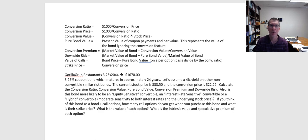If the stock goes up, you can convert that bond into shares of the underlying stock at a fixed conversion ratio. For example, a bond might be convertible into 10 shares of common stock or maybe 15 shares of common stock. That conversion ratio — the number of shares it's convertible into — is going to be specified in the bond agreement.